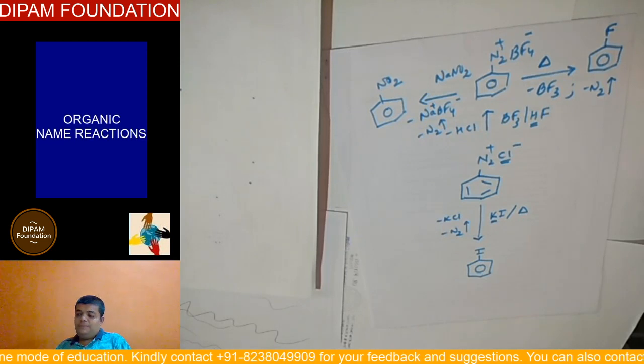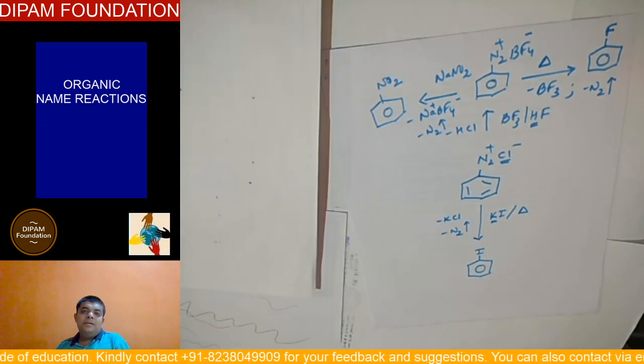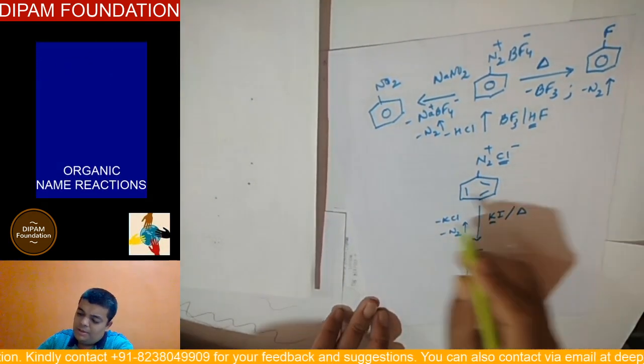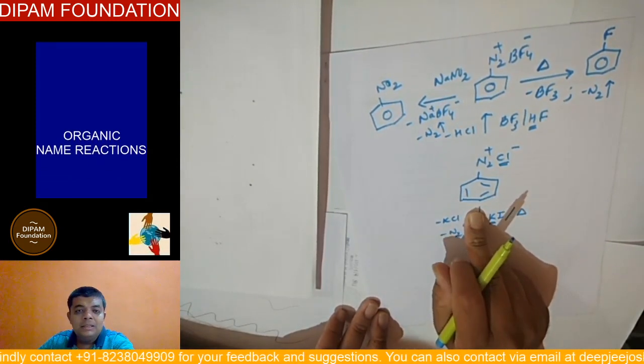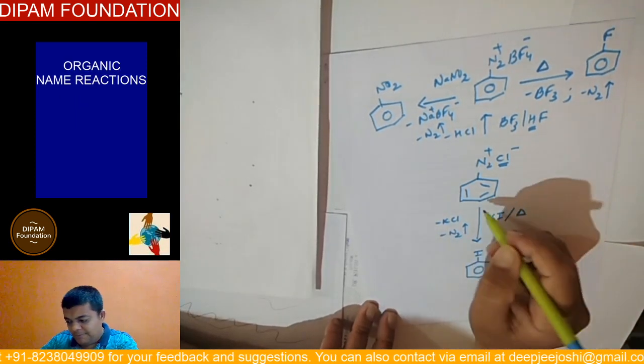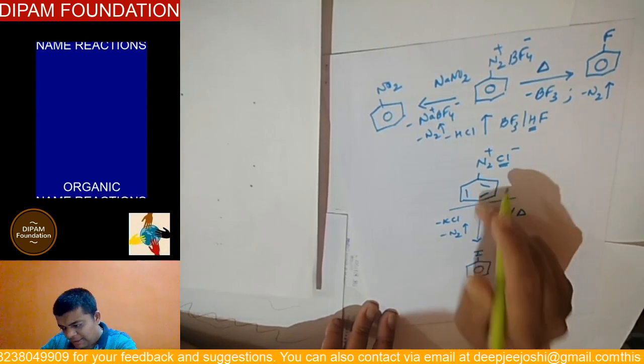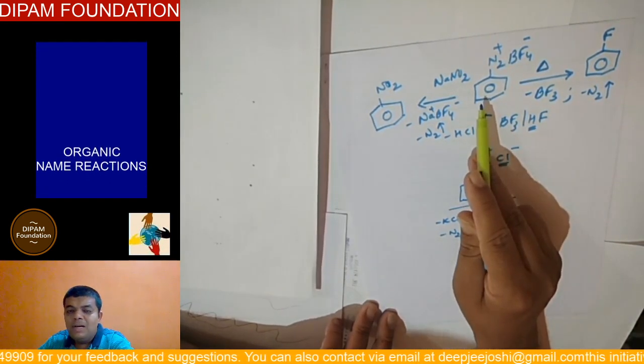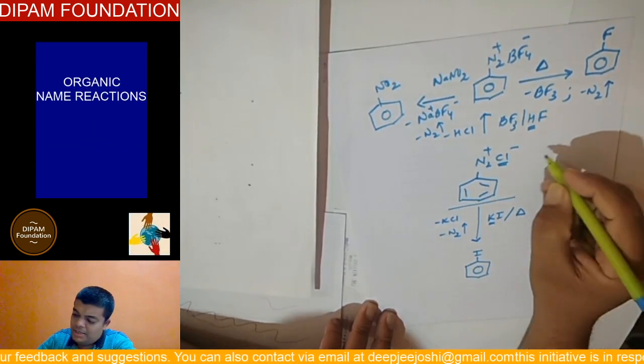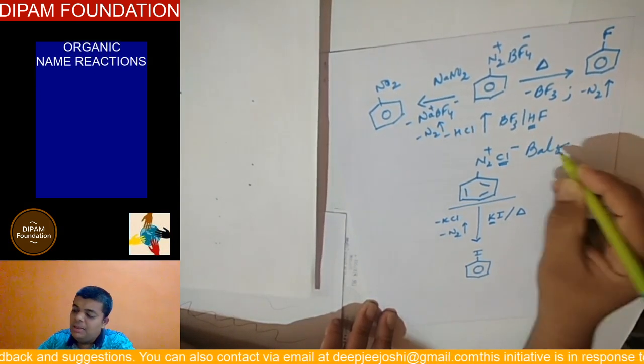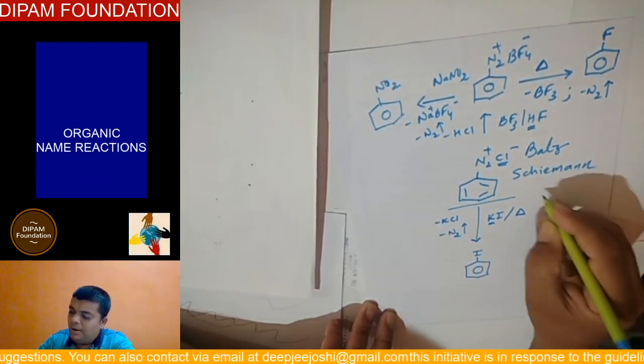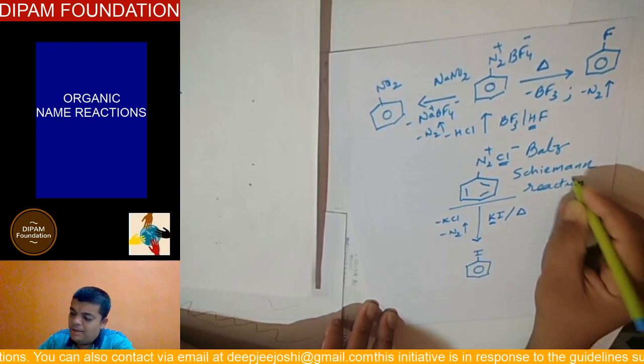As we are discussing name reactions, organic name reactions. This particular formation that came from aniline was a diazotization reaction but this step where from benzene diazonium chloride gets converted to benzene diazonium fluoroborate and benzene diazonium fluoroborate gets converted to fluorobenzene is known as Balz-Schiemann reaction.